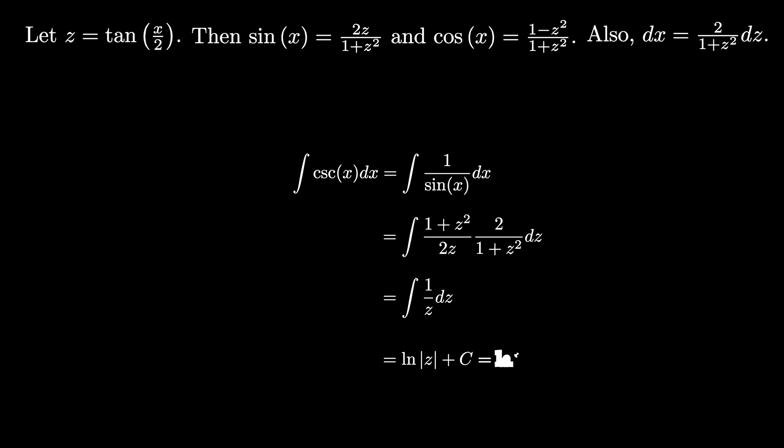Remembering that z equals the tangent of x over 2, we see that the integral of cosecant x dx is equal to the natural log of the absolute value of tangent of x over 2 plus a constant.